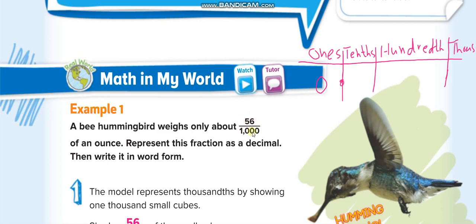Now they want you to write 56 over 1000 as a decimal. The denominator is 1000, so the last digit will go in the thousandths place. The last digit 6 goes here, five goes before it, and we fill the remaining places with zero. So we write it as zero point zero five six.